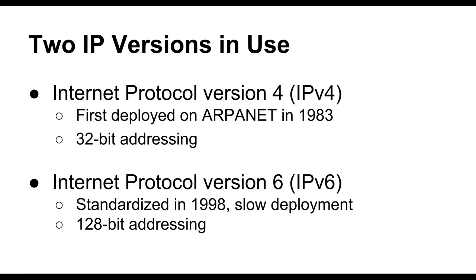We have two versions of the Internet Protocol in use today. IP version 4 is the most widely used; it was first deployed on ARPANET back in 1983 and uses 32-bit addressing, which has proved limited as the number of devices has exploded. IP version 6 was standardized in 1998 and is now seeing widespread deployment, particularly in Asia. It uses 128-bit addressing and provides enough IP addresses for every device on the planet — at least all the devices we have now and expect in the near future. Both are examples of network layer protocols.